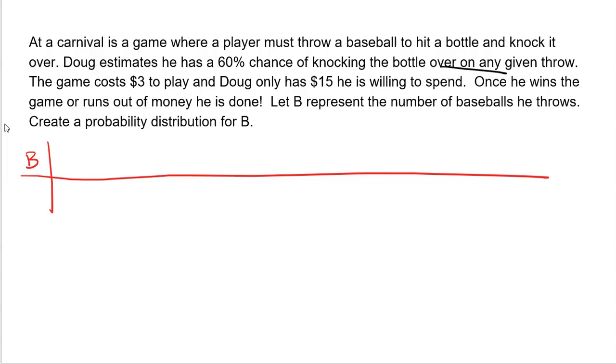B is the number of baseballs he throws. Can he throw zero baseballs? Well, he's playing the game, so he's at least going to throw one. We're going to start off with one baseball. What would have to happen for him to throw one baseball and be done? That means he throws one baseball, he hits the bottle, falls over, he wins the prize. That is 60%. What's the probability he throws two baseballs? To throw two baseballs means that on the first throw he lost, which is why he says I'm going to play again. And then on the second throw he wins. So he needs to miss the first, there's a 40% chance he misses, times 60% make on that second throw. 0.4 times 0.6 is 0.24.